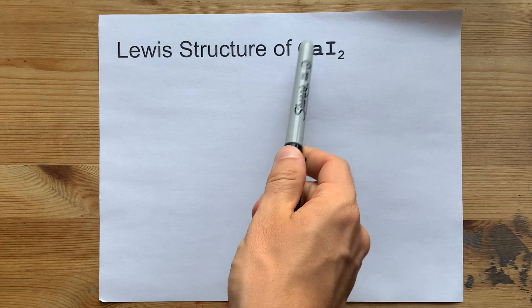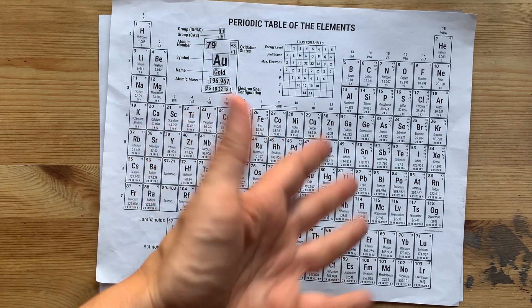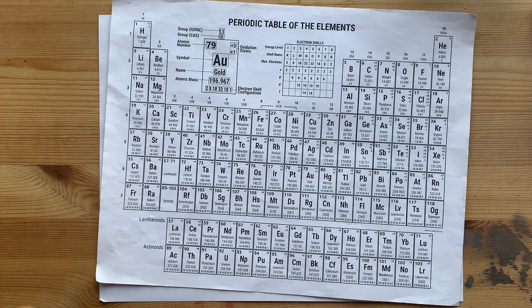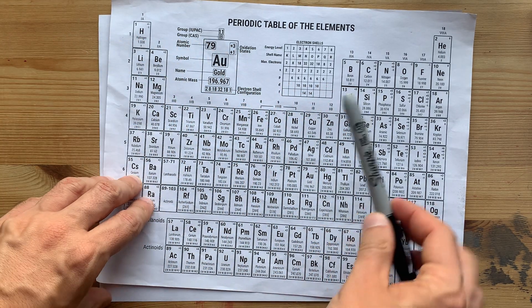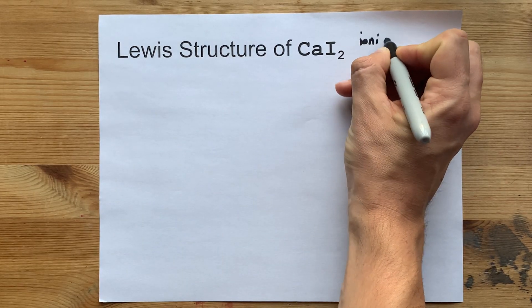Let's draw the Lewis structure of CaI2, that's calcium iodide. Calcium is a metal from the left side of the periodic table. Iodine is a non-metal from the right hand side. That makes this an ionic compound.